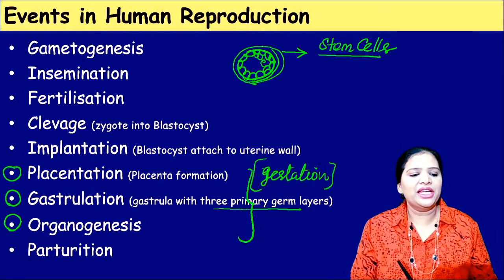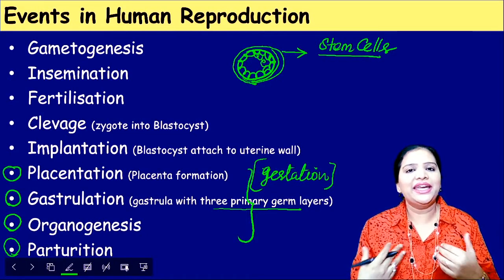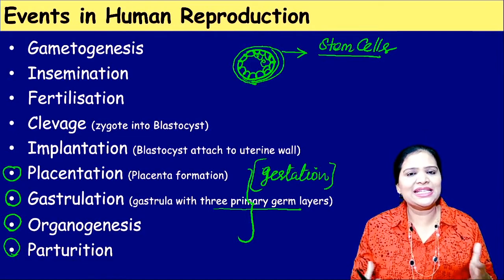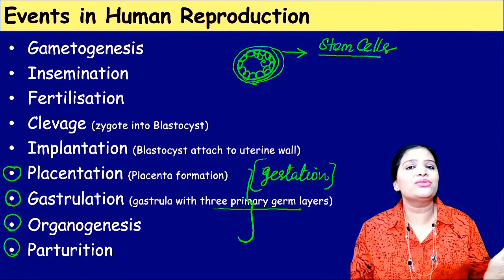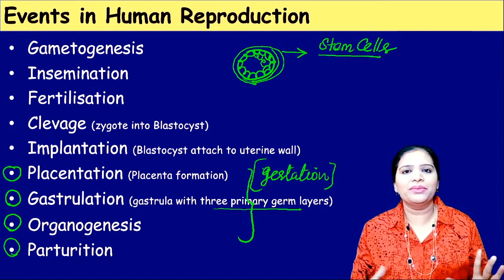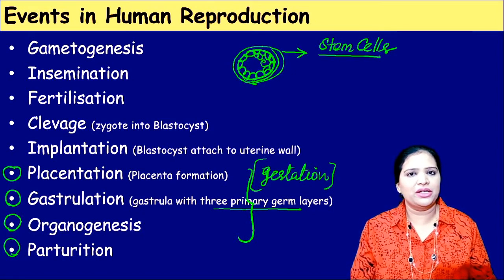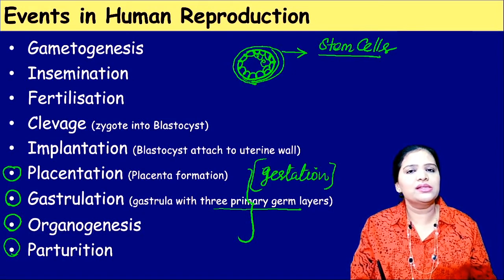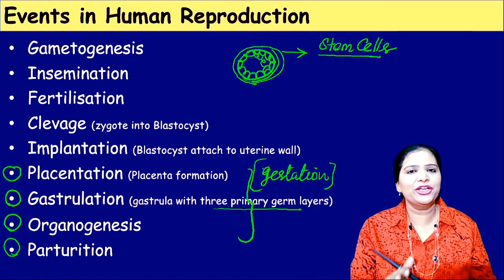Finally, there is parturition, which means delivery. Once the baby develops completely after 10 months, it gets released out from the womb. This stage is called parturition. These are the events in human reproduction — very complicated events involving hormonal control, but all well-programmed steps.